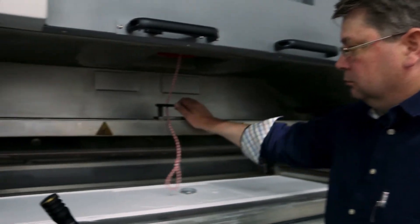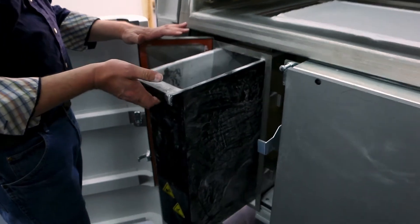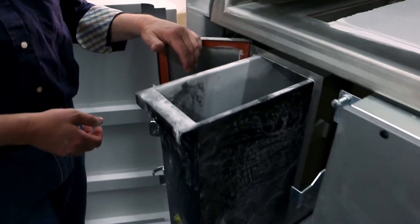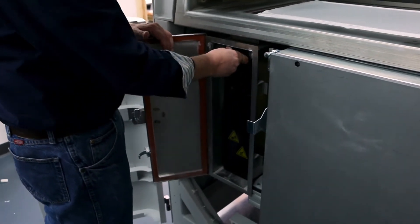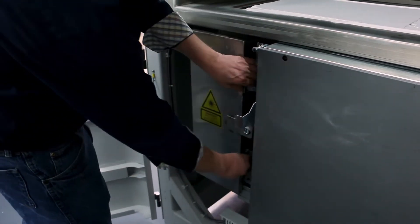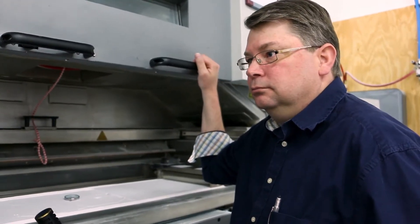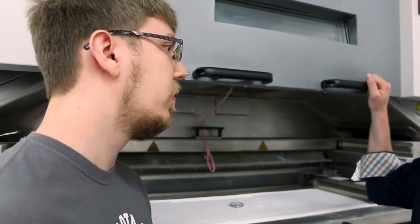And what material do you actually have in here right now? So we have nylon 12 in the machine right now. There is a lot of different materials available for SLS - a lot of filled, like aluminum filled, carbon filled, glass filled materials. This machine is capable of running all of them, but we just run the nylon 12. Have you ran any of the other materials before or just primarily the nylon 12? Just nylon 12.